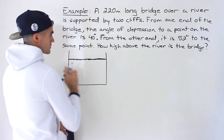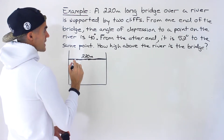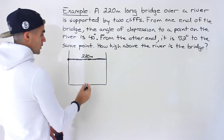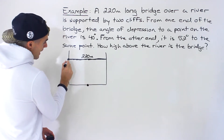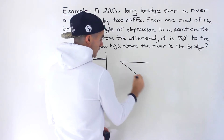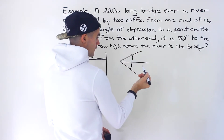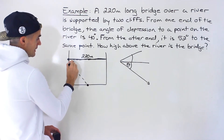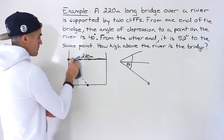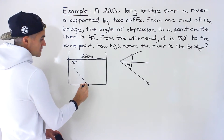The bridge is going over this river and we're told it is 220 meters long. From one end of the bridge — let's say this end here — the angle of depression to a point on the river is 40 degrees. Remember that the angle of depression or elevation is always measured from the horizontal. So if we're going down like this, this here would be the angle of depression. So at a 40-degree angle of depression, we're looking at a point on the river.